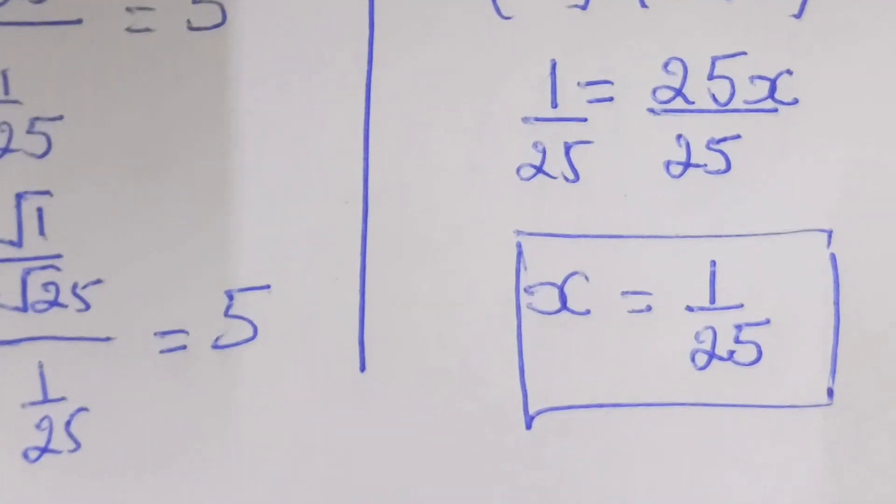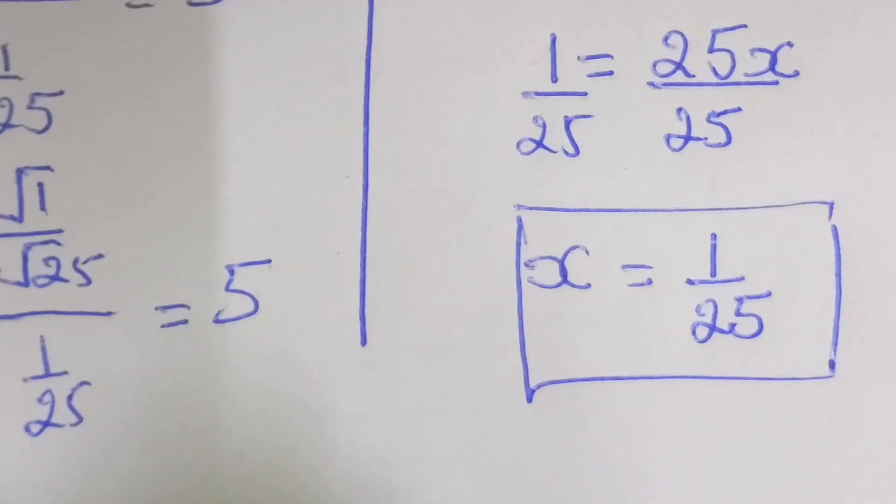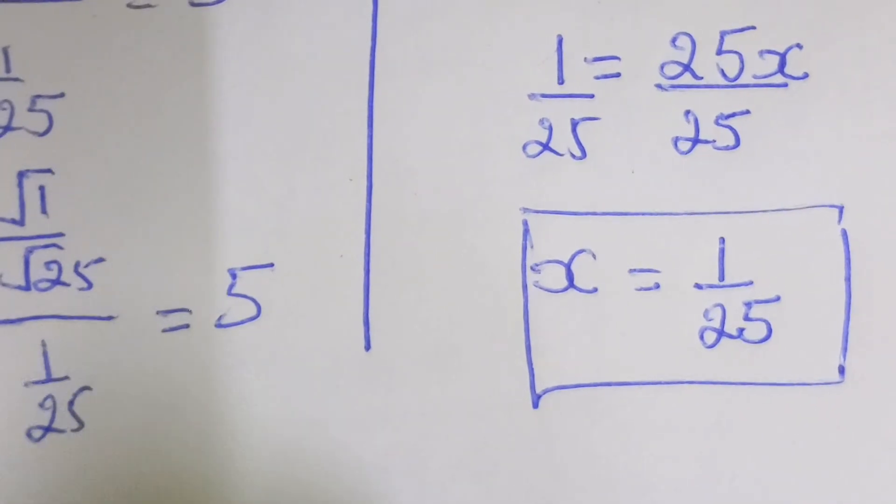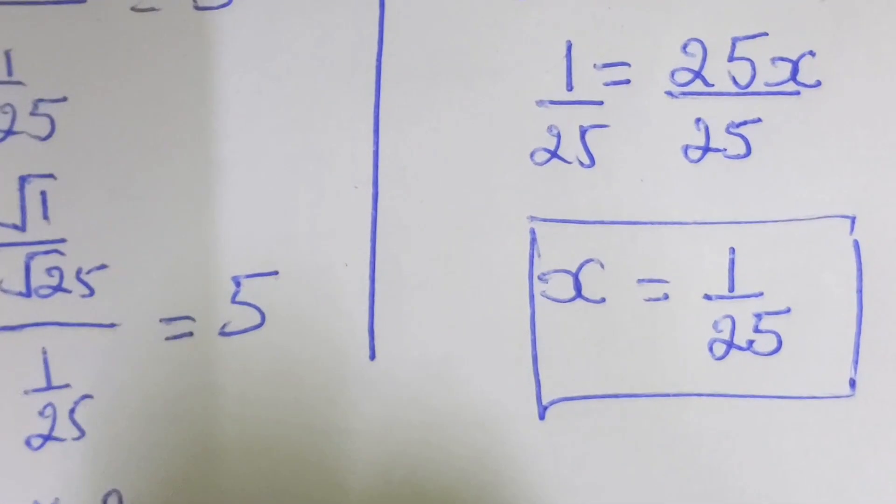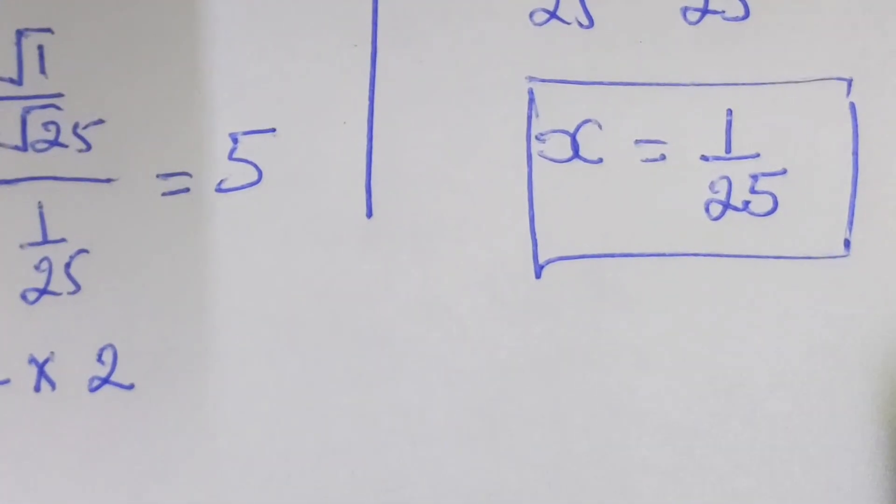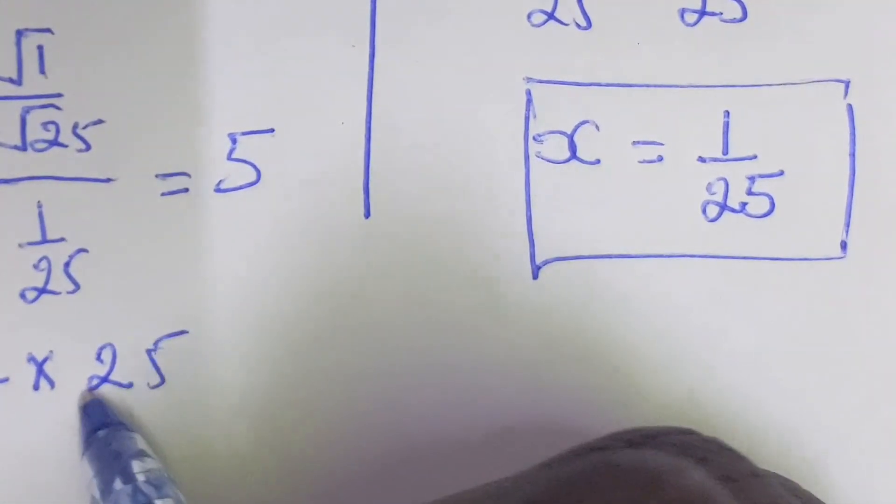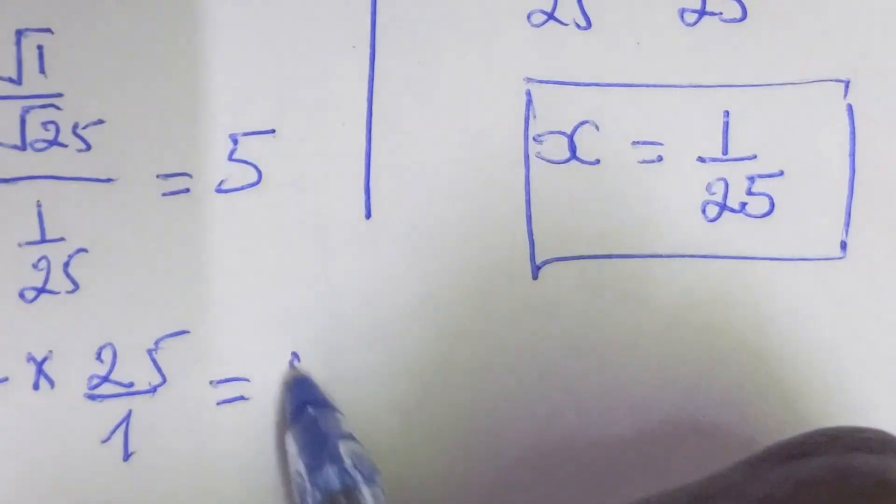Then this is equal to 1 over 5 times 25 over 1 which equal to 25, question mark.